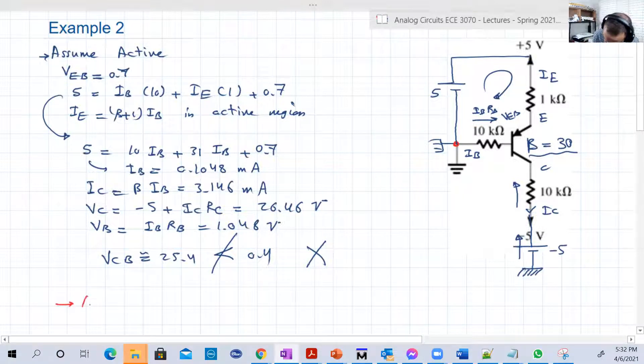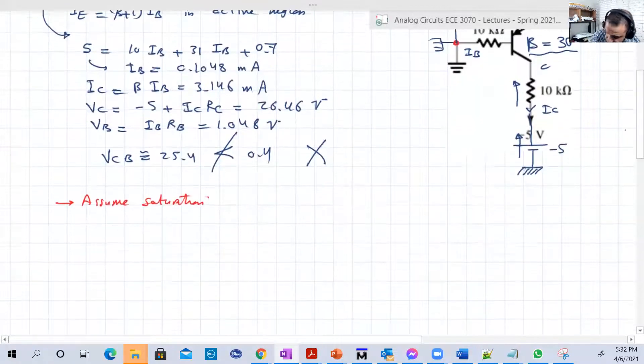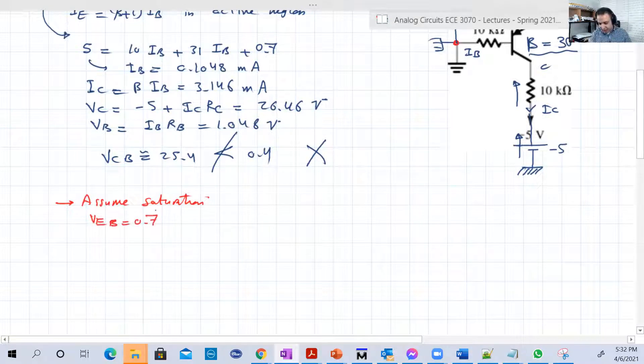So we're going to assume saturation. In saturation, we still have VEB equal to 0.7, because this is BNB transistor, so not VEB, it's VEB. And we have IC less than or equal to beta IB. It's not equal anymore. And we have a new equation here, that VEC is 0.2, and in the beginning it was VCE, now it's VEC. So how we can use this new equation to solve our circuit, just to Kirchhoff, as we will see. Everything is Kirchhoff.